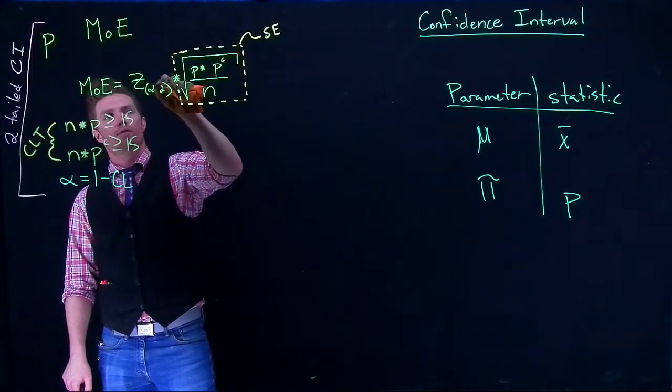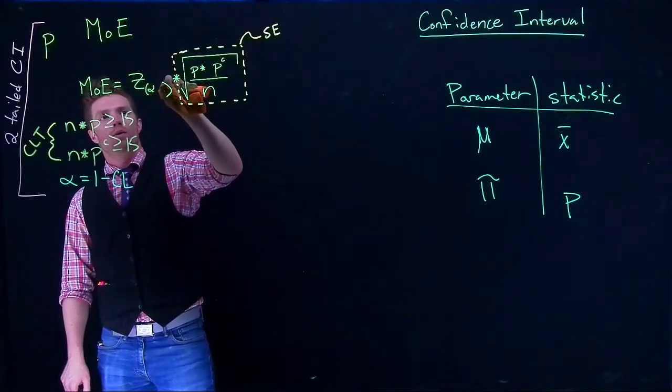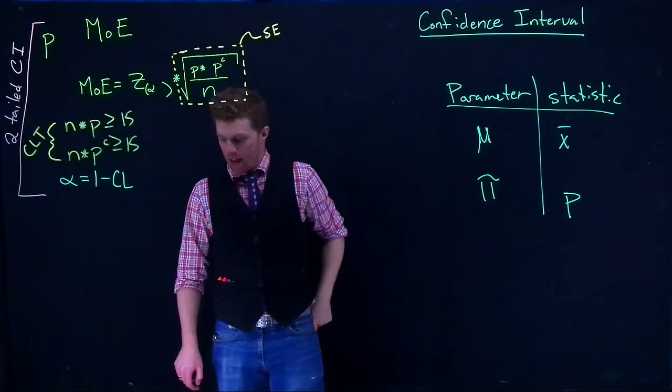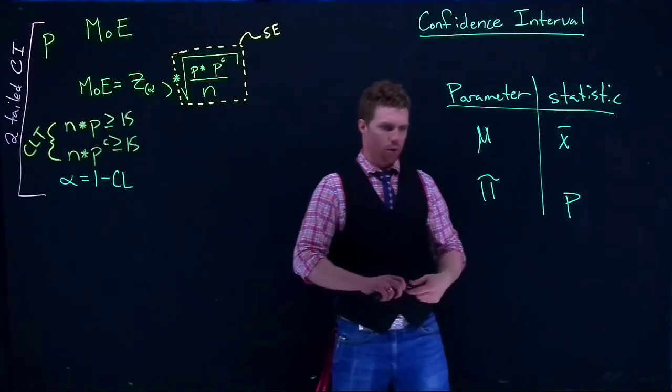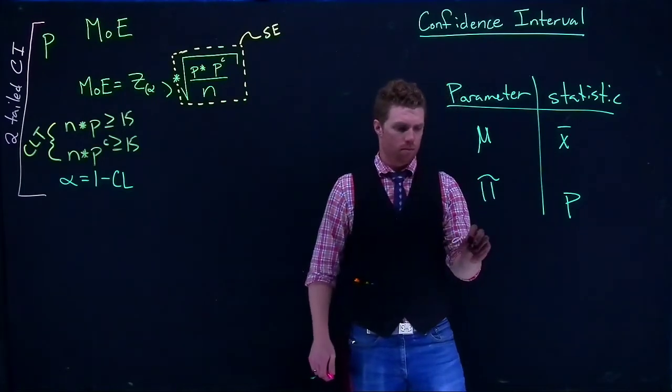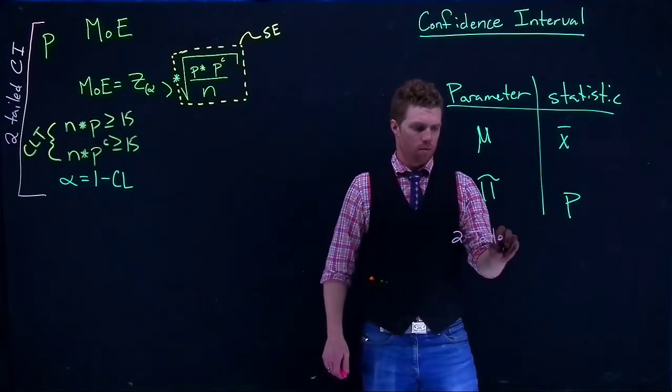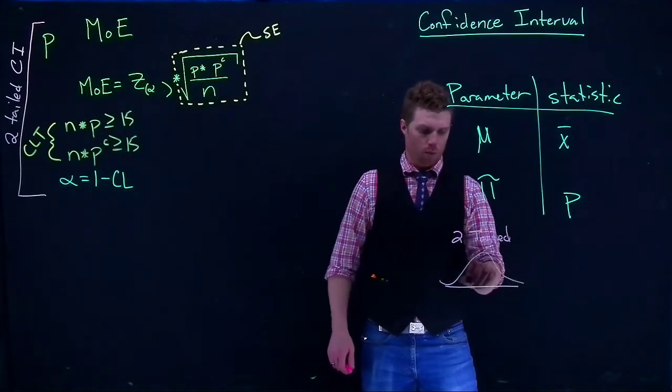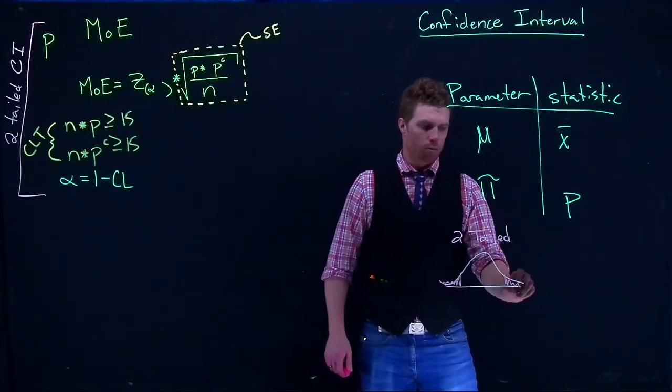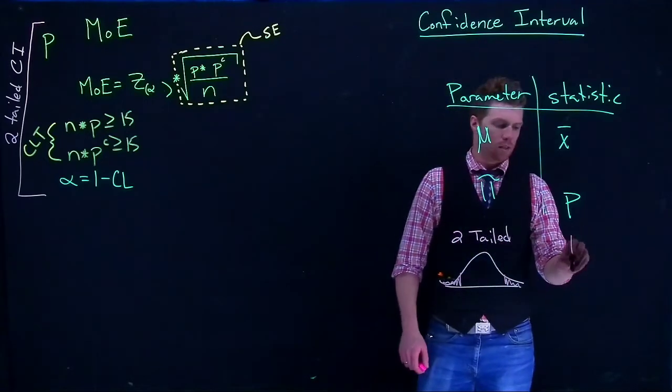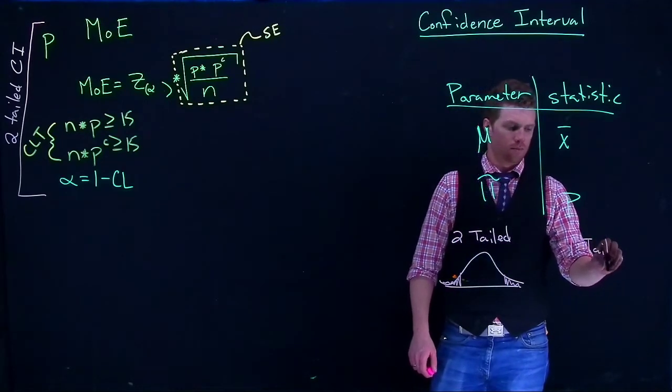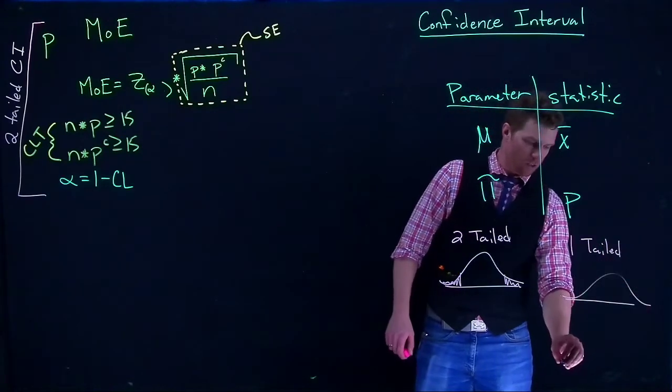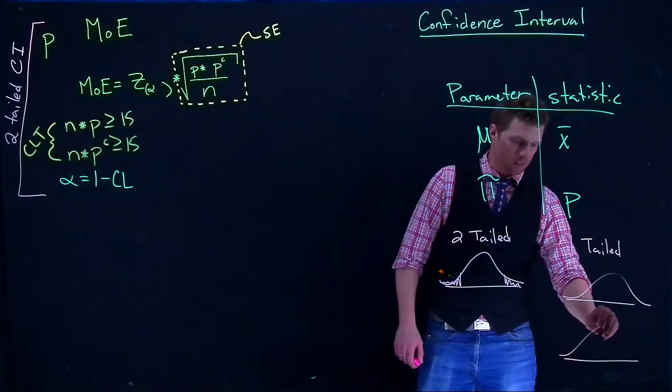But remember, if we're doing one-tailed, we're throwing all of the error to one side. So let's just draw a picture of that real quick. If we're doing two-tailed, just conceptually, we're throwing some of that alpha error onto both tails. Now if we're doing one-tailed, we've got two options.